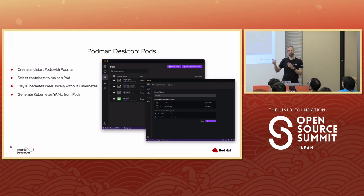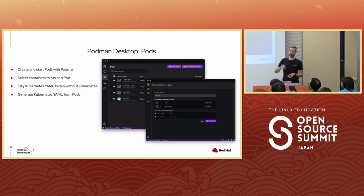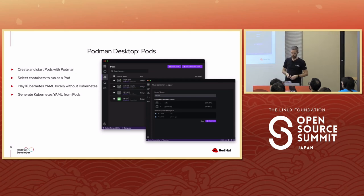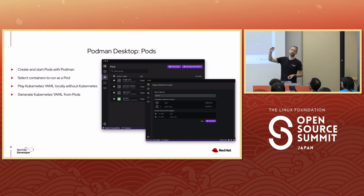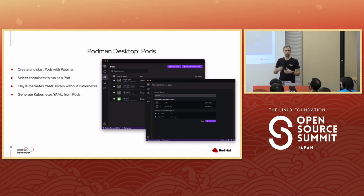In terms of pods, you can create pods from containers just from the UI — select the containers you want, and it'll create a pod where they share the network. You can also generate Kubernetes YAML directly from those pods and deploy that to a Kubernetes instance running on your local machine or remotely.